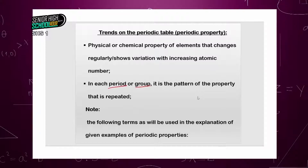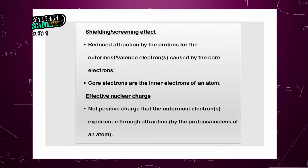So when we are looking at the periodic properties one after the other, we need to keep the following terms. Shielding or screening effect — it is the reduced attraction by the protons for the outermost or valence electrons caused by the core electrons.